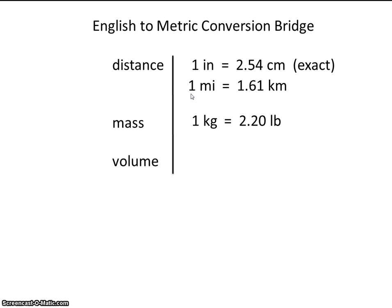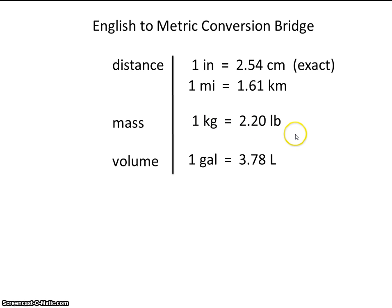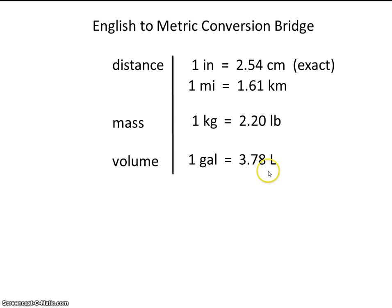Here's one for mass: one kilogram equals 2.20 pounds. And one for volume: one gallon equals 3.78 liters. These all have three significant figures in the conversion.